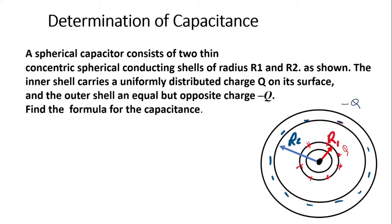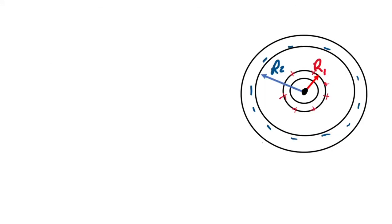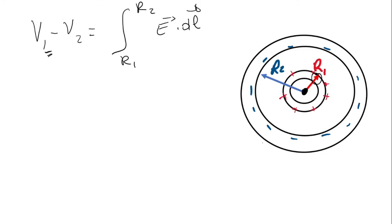Now we are going to use the definition of electric potential difference between R1 and R2. Once we find this electric potential difference, we will get the capacitance. The electric potential difference between R1 and R2 by definition is given by V1 minus V2, which will be the integral from R1 to R2 of E · dl.